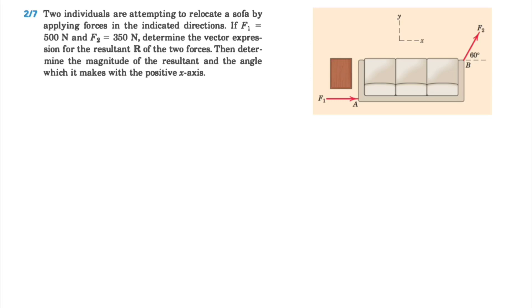All right guys, welcome back. We're going to be solving a question from Merriam textbook. We have two people trying to relocate a sofa by applying two forces at point A and B. We know F1 is 500 newtons and F2 is 350 newtons. We need to determine the vector expression for the resultant of these two forces, and we need to determine the magnitude of the resultant and the angle which it makes with the positive x-axis. So we can see x and y-axis in the question. Let's see how we can solve this one.